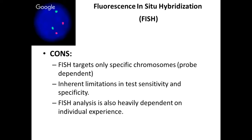The pros of FISH: it only requires a small amount of tissue, can easily be performed on paraffin-embedded tissue, and permits detection of abnormal subpopulations within a heterogeneous tissue mixture because you're actually staining it on the glass slide — giving you visual correlation between cytomorphology and abnormal chromosome numbers. The cons: FISH targets only specific chromosomes — it's probe-dependent. If you're not using the right probe set, you won't find the right abnormalities. Also, there are inherent limitations in test sensitivity and specificity that are largely user- and technician-dependent.